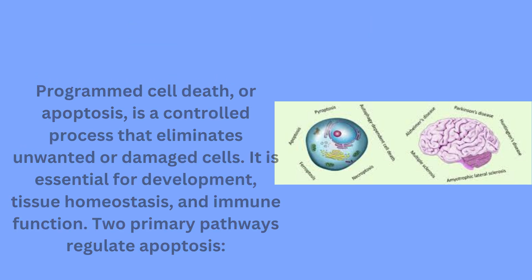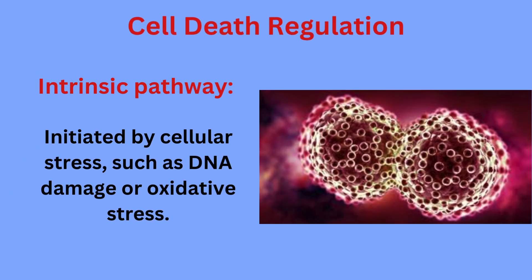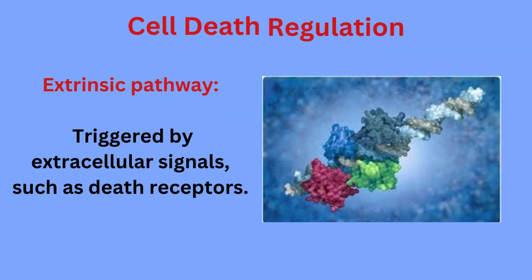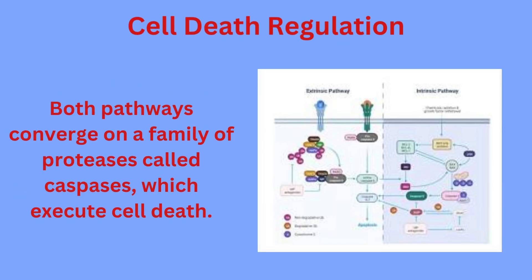Two primary pathways regulate apoptosis. The intrinsic pathway is initiated by cellular stress such as DNA damage or oxidative stress. The extrinsic pathway is triggered by extracellular signals such as death receptors. Both pathways converge on a family of proteases called caspases, which execute cell death.